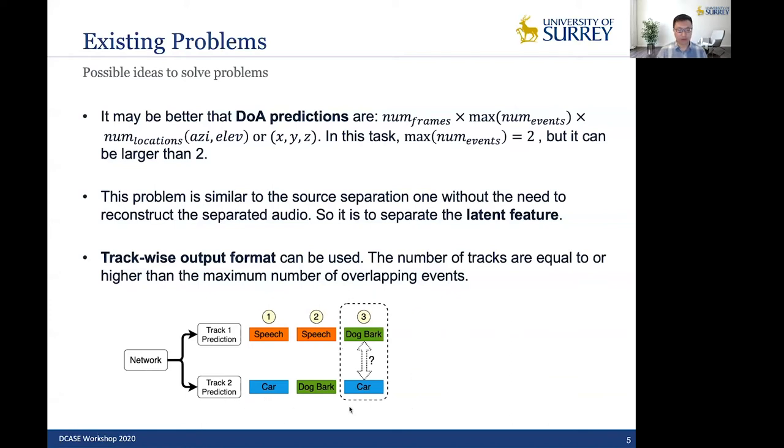And for the third group, what if the targets are dog bark and a car? How are we supposed to assign tracks? It is hard to predict. So now there's another problem arising, which is track permutation problem.